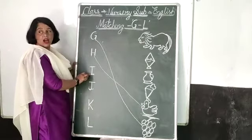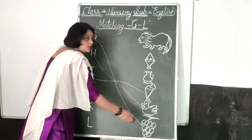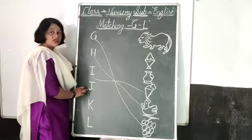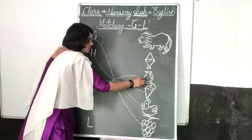This letter I. Now we will match I for ice cream. This letter J. Now we will match J for jug.